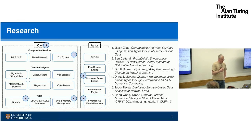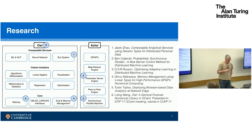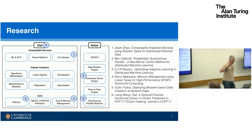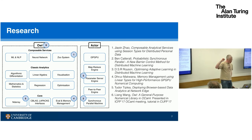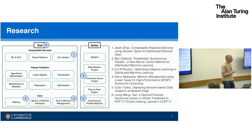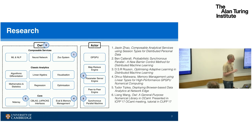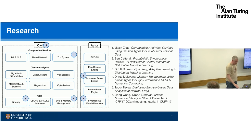Existing work: Jinxin is looking at the Zoo system and trying to make it a more powerful tool for sharing and in particular composing existing models. Ben did some work on barrier control method for distributed machine learning, which I'll talk about in the latter half. We have work going on to optimise the parameter server engine, looking at using linear types — Drogmakwana is another student in Cambridge looking at linear types for memory management for high-performance and GPU numerical computing. And Tudor, as I mentioned, is looking at compilation of OWL models into JavaScript so they can be run in browsers.